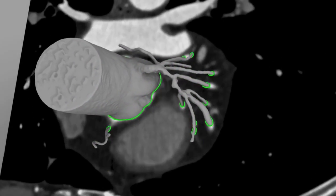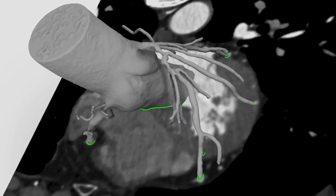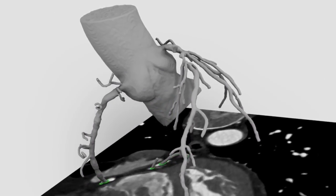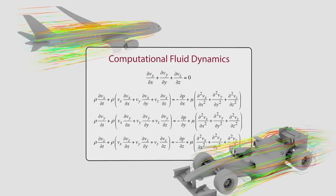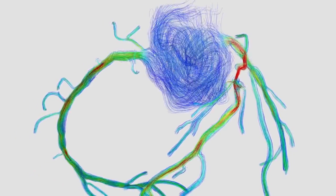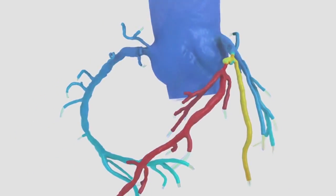From the CT images, HeartFlow creates a complete geometric and physiologic model of the patient's unique coronary anatomy. Next, the scientific principles of computational fluid dynamics are applied to model the complexities of fluid flow.